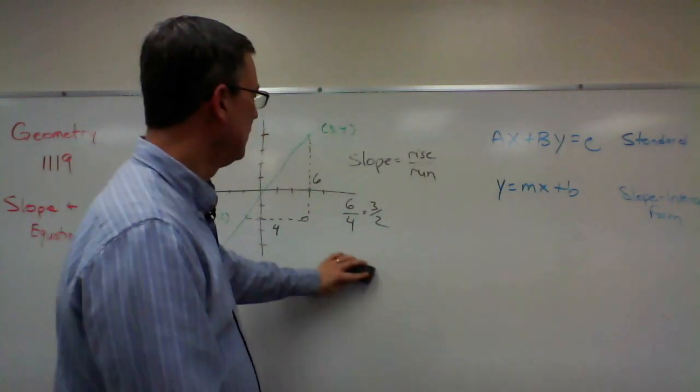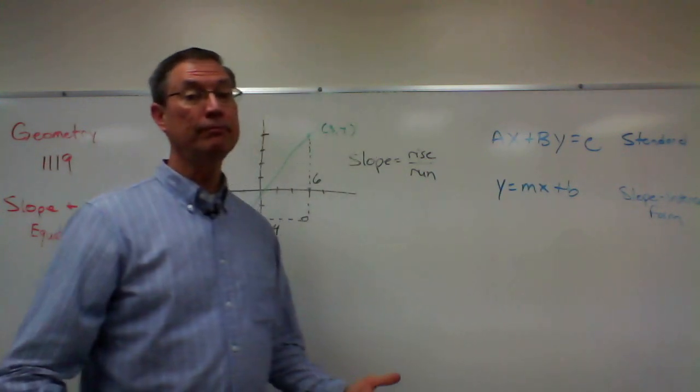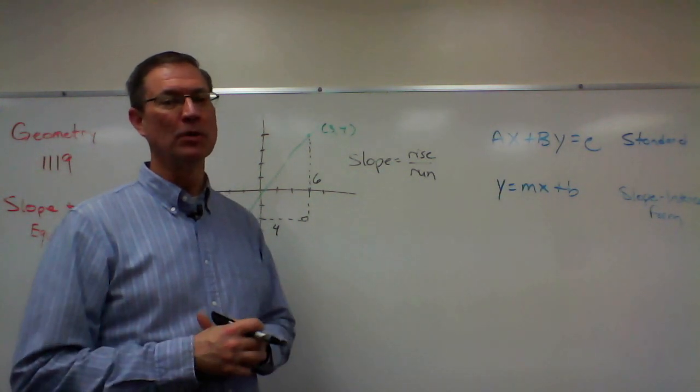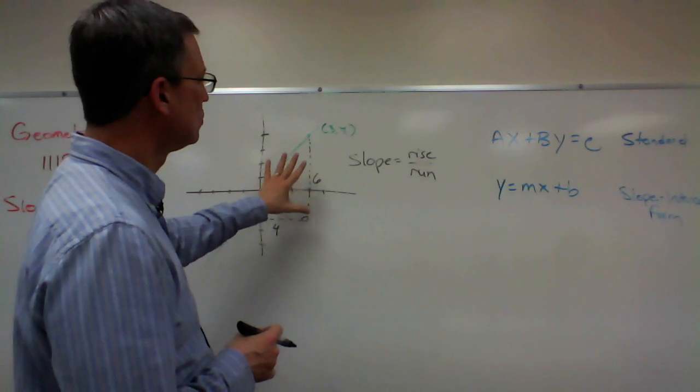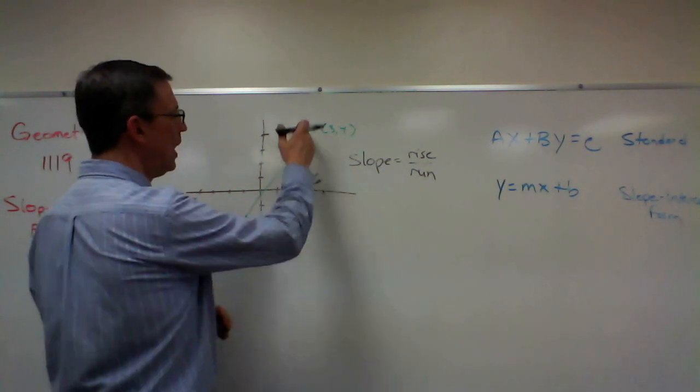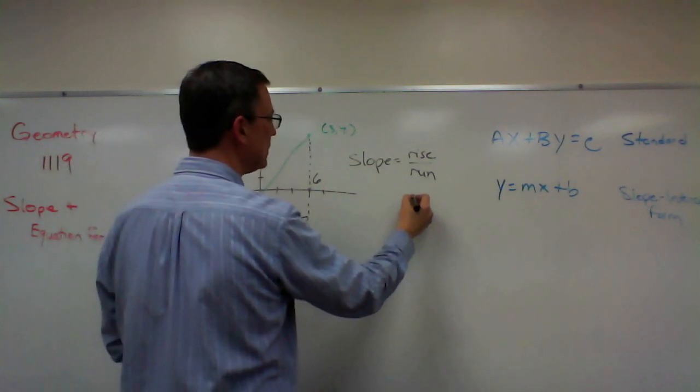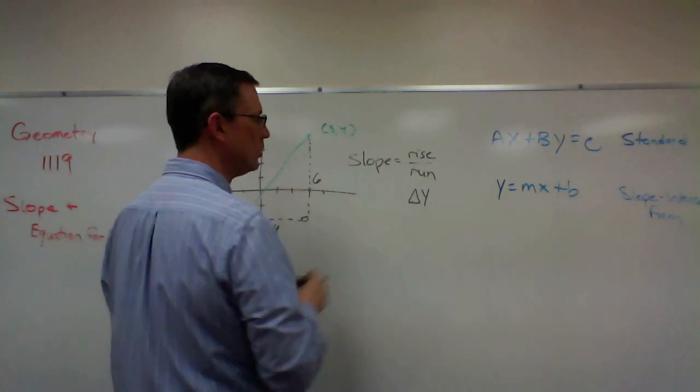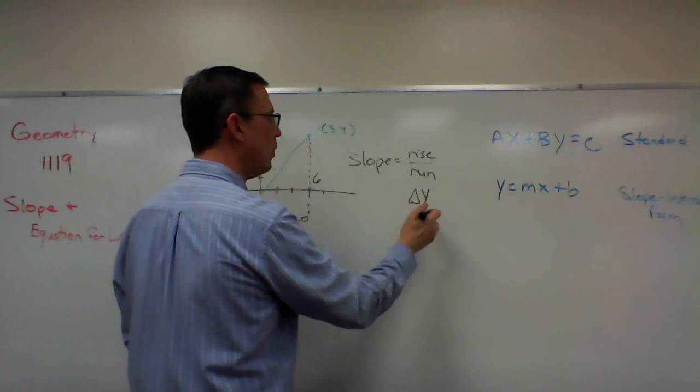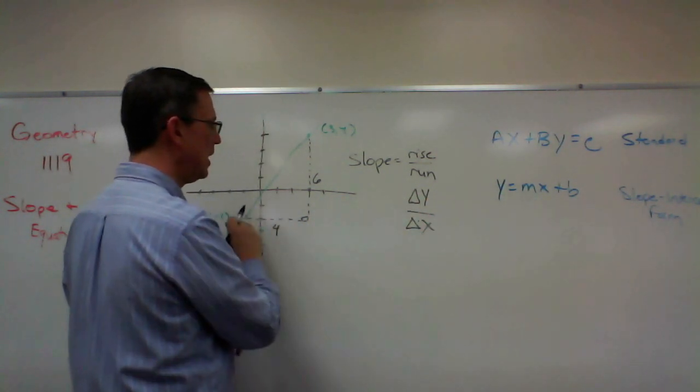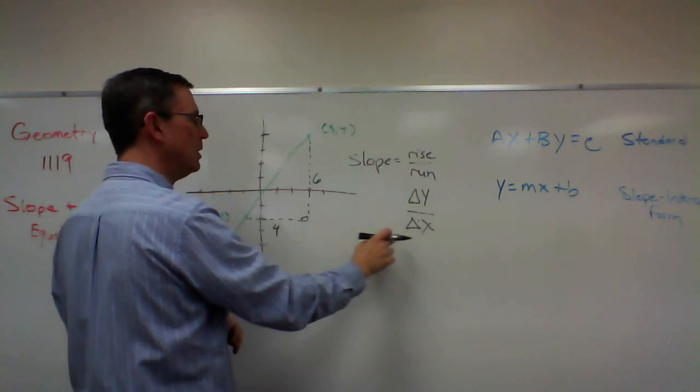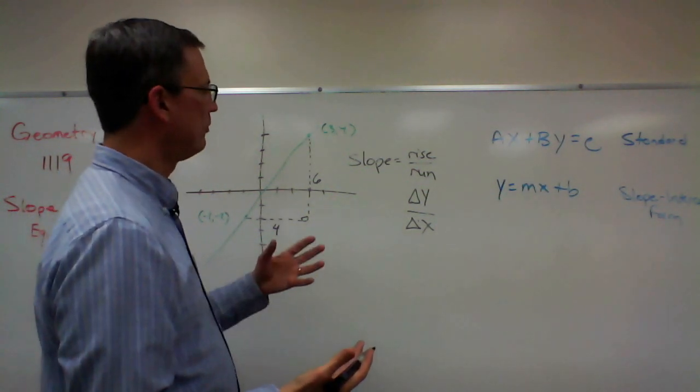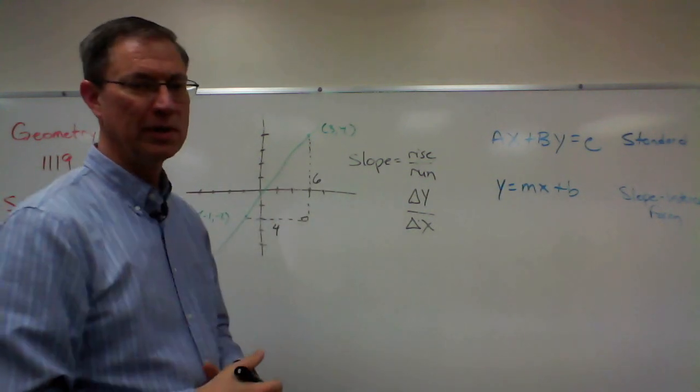So that's one way to do it. If you have it, you could graph the points, make a triangle, figure out the rise over the run. But sometimes they are going to give us numbers that are harder to graph or maybe impossible to graph. And there needs to be a formula. Mathematicians love formulas. So let's get a formula together to solve for the slope.